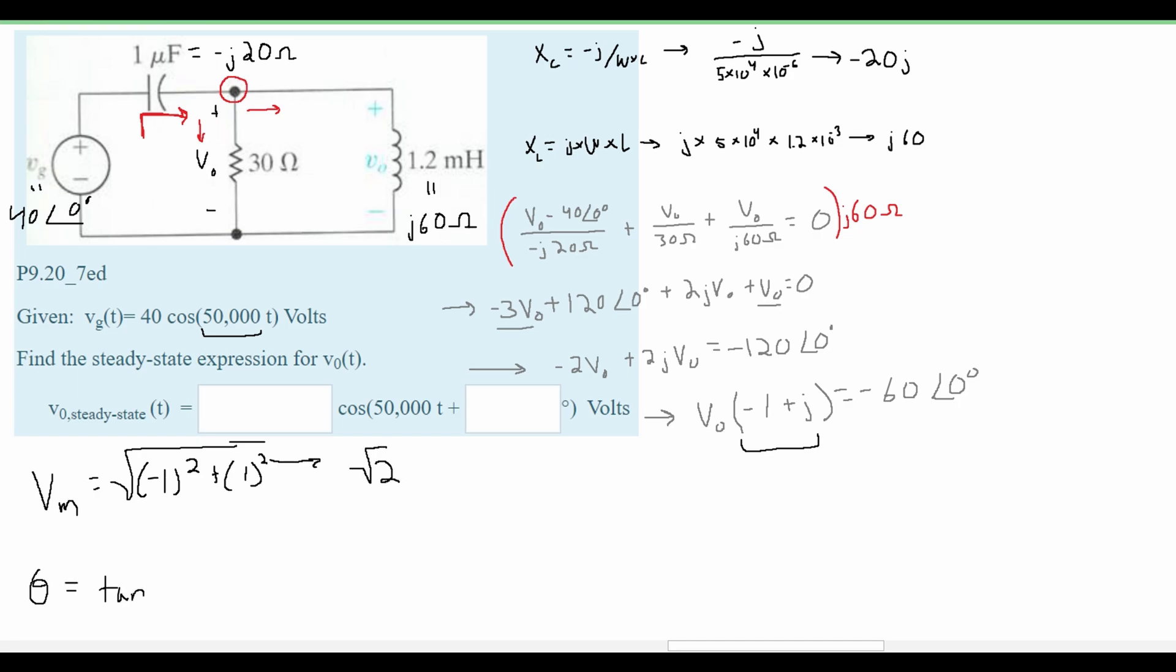For our theta we know this is tangent inverse and then we are going to have our imaginary number which is 1 divided by our real number which is negative 1. And this is going to give us the value of negative 45 degrees. And now we can combine these two together and we are going to get the square root of 2 with the angle negative 45 degrees.